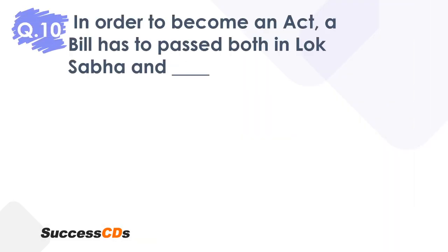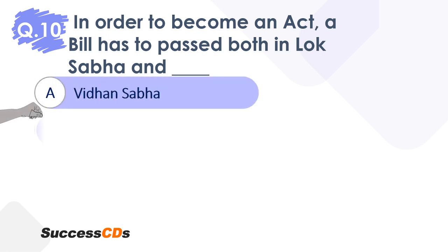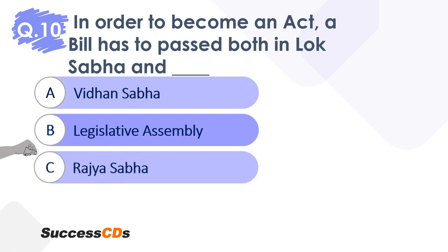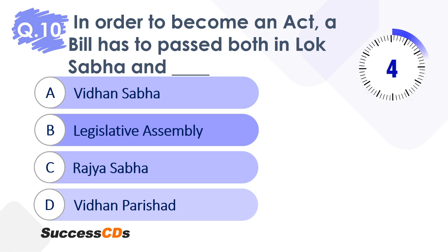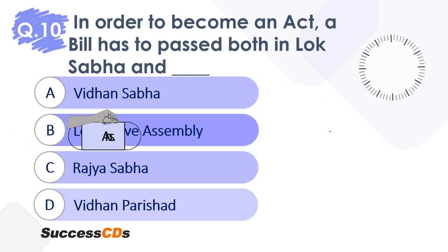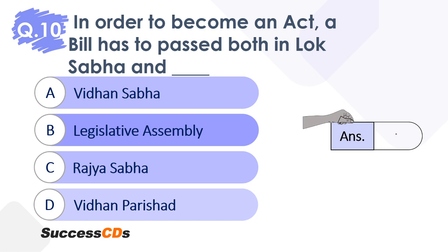Moving to question 9. In order to become an act, a bill has to be passed both in Lok Sabha and dash. Is it Vidhan Sabha, Legislative Assembly, Rajya Sabha, or Vidhan Parishat? Your time starts now. Please think about it and you should also know the reason why that is the answer. The reason is very important. The correct answer here is obviously option C — Rajya Sabha.